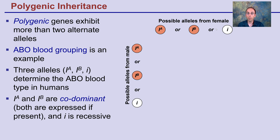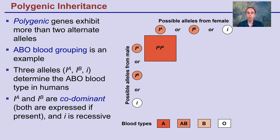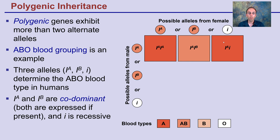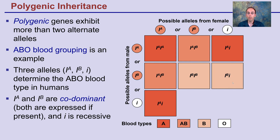Here are the possible alleles from the father: A, B, or I (standing for O blood type). Crossing these together, A and A gives A blood type. A crossed with B — because this is polygenic — gives AB blood type, with both being expressed. A crossed with the recessive I gives A blood type, since O has no marker. B and B gives B blood type, and B with the recessive I is just B blood type. The only way to get true O blood type is to have both recessive alleles present.